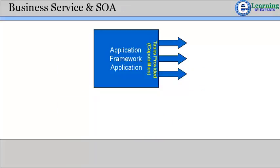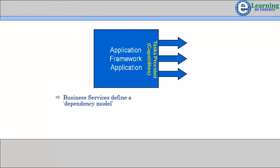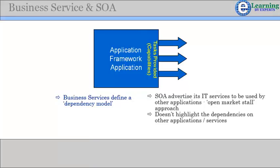A fundamental difference between TM Forum Business Services and Service Oriented Architecture (SOA) is that Business Services define a dependency model. SOA is based on each application advertising the IT services it supplies for use by other applications. This is an open market stall approach, where on an individual transaction basis, consumers use a directory of stall owners to pick the services they need and identify the particular stall where that service is available.